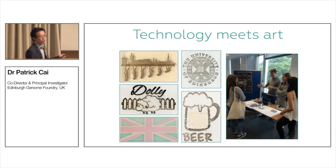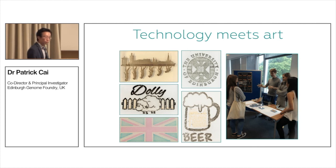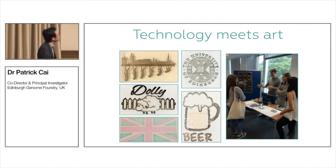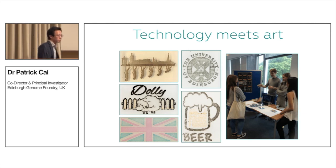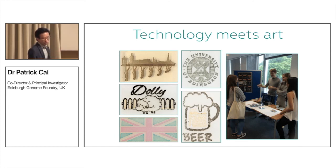To finish up, I want to show another cool thing we did: we used ECHO to print live cells. These are engineered yeasts that produce different compounds — in this case the purple compound violacein, which is an anti-cancer drug, and the orange ones are beta carotene. We use ECHO to print different pictures using these pigment-producing yeast. This is an edible landscape — if you look carefully, the flip side shows Darwin's evolution tree. We bring this to open days so students can come in and learn what synthetic biology, acoustic dispensing, and genome engineering are.